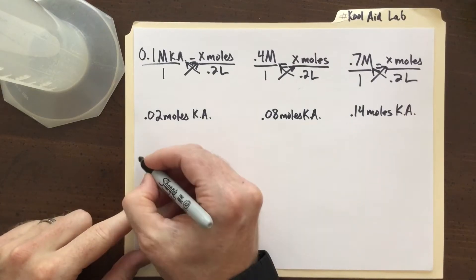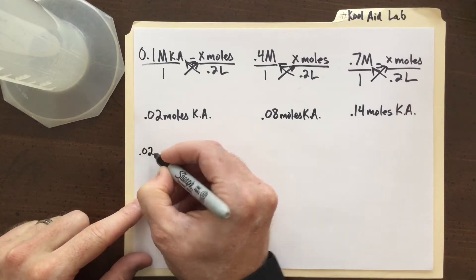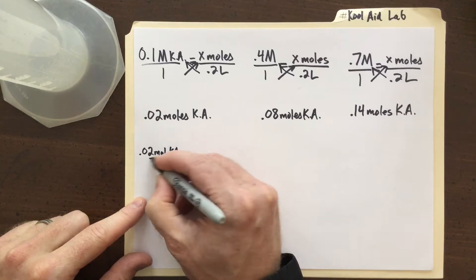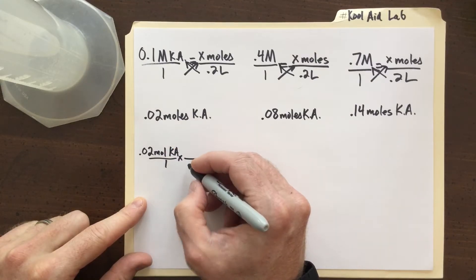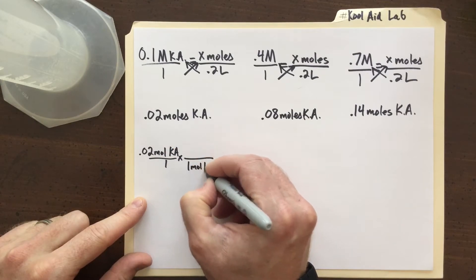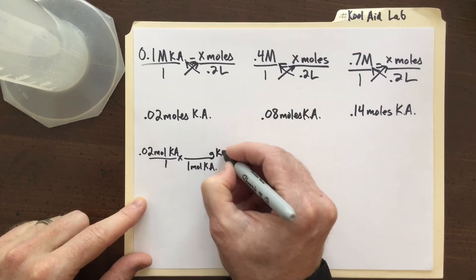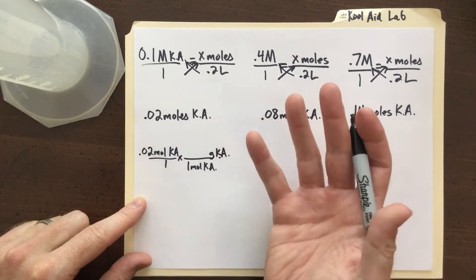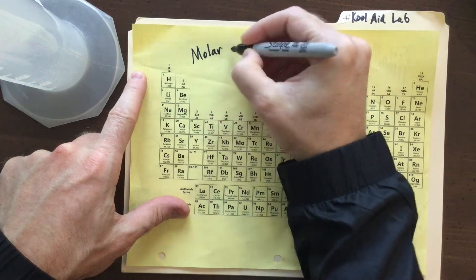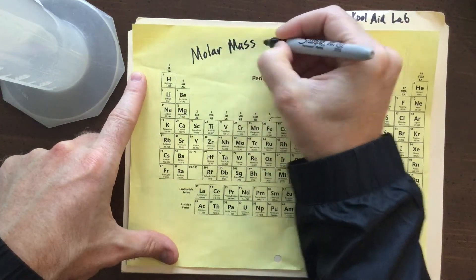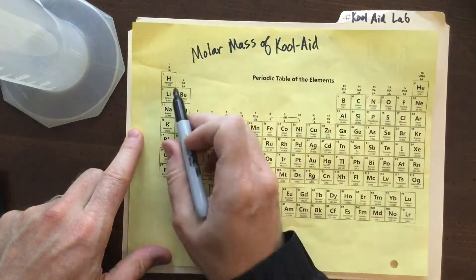Now I'll do a mole problem. I'll take my 0.02 moles of Kool-Aid over 1, and on the bottom of the fraction write 1 mole of Kool-Aid. On the top, I need to figure out the molar mass of Kool-Aid. I'll go ahead and take a look at the periodic table, scanning through it to look for Kool-Aid.